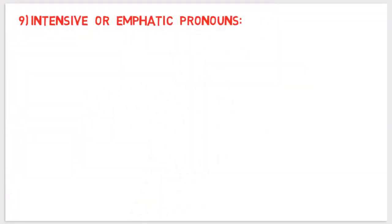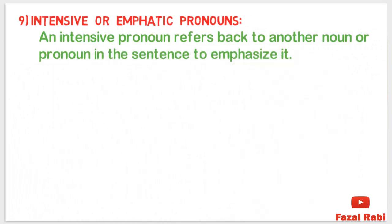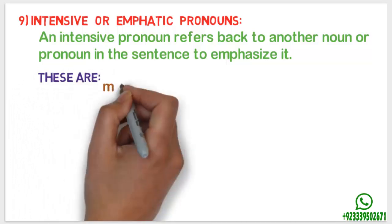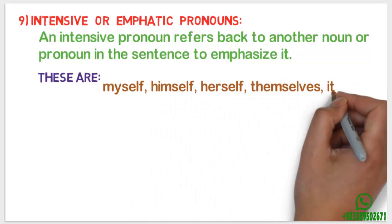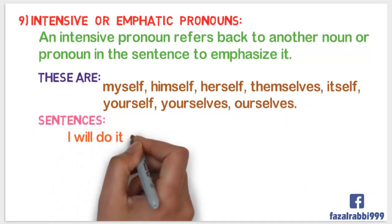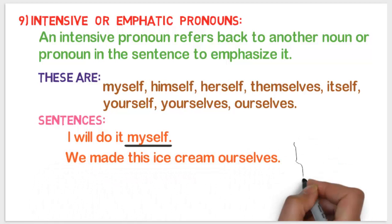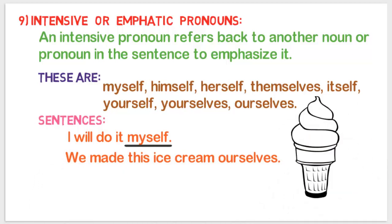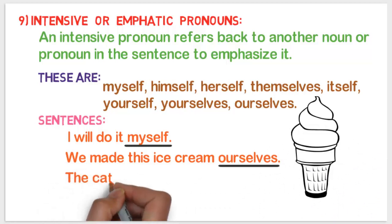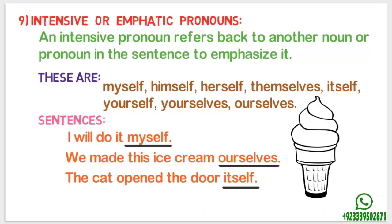Number nine: intensive or emphatic pronouns. An intensive pronoun refers back to another noun or pronoun in the sentence to emphasize it. These are: myself, herself, themselves, itself, yourself, yourselves, ourselves. For example: 'I will do it myself' — myself is an intensive or emphatic pronoun. 'We made this ice cream ourselves' — ourselves is an emphatic pronoun. 'The cat opened the door itself' — itself is an intensive pronoun. Dear students, don't get confused between intensive and reflexive pronouns. Please watch my other video on the difference between intensive and reflexive pronouns, which will clarify all your ambiguities for sure.